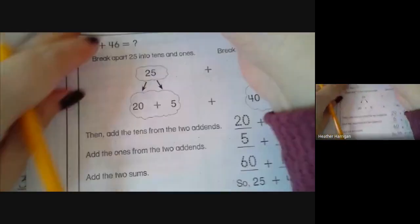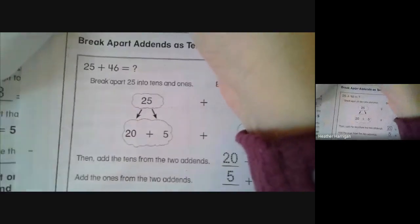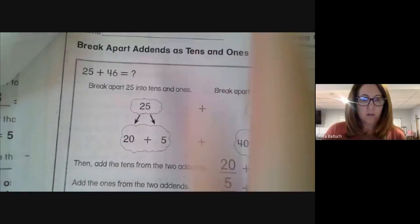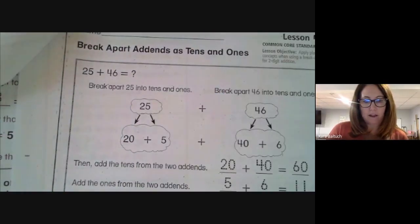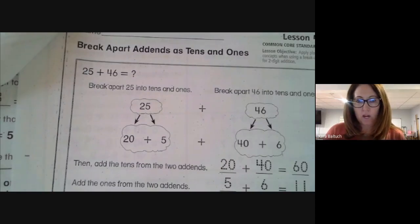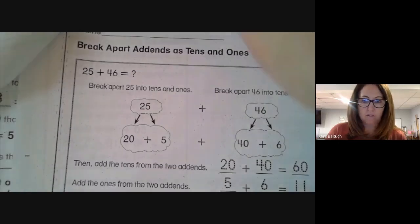The next one we're going to do, we're going to break apart our addends this time as both tens and ones. So if you can look at this example, we're going to take 25 and make it 20 plus 5, and we're going to make 46 into 40 plus 6.